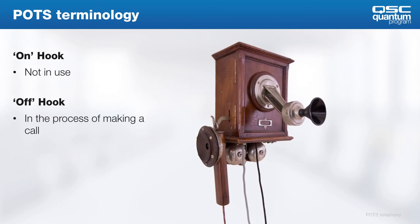Many terms used in analog telephony today were named after their analog predecessors from so many years ago. For example, we often talk about a phone being on or off hook. That's because an old phone used to have a literal hook to hold the handset. When it was off hook, it meant that you were speaking to somebody. This term somehow survived today, even without the hook.